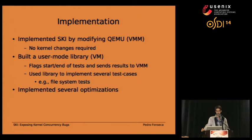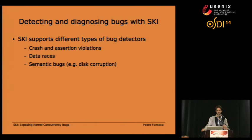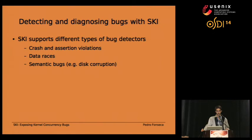Ski allows kernel developers to explore the interleaving space systematically, but at the end we have lots of executions and still need a method to tell users which executions exposed concurrency bugs. We experimented with very different types of bug detectors: simpler ones such as crash and assertion violation detectors, and more complex ones such as data race detectors and even semantic bug detectors to detect disk corruption. Our experience shows that Ski is flexible and compatible with a wide range of bug detectors, allowing it to detect different types of concurrency bugs.